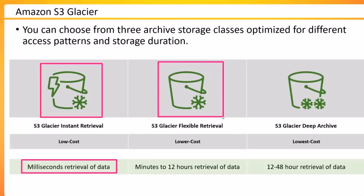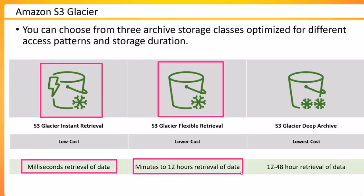The second class is S3 Glacier Flexible Retrieval. If you request data from this class of Glacier, you will need minutes or hours to retrieve that data. You first initiate a request for the specified data, the job runs asynchronously in the background, and once the data is ready you can access it. If you are doing instant retrieval very frequently, Flexible Retrieval may not be very cost-efficient. Be conscious about when to use Glacier Instant Retrieval versus Flexible Retrieval.